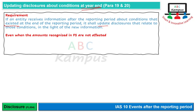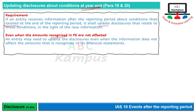Even when the amounts recognized in financial statements are not affected। बाजवकत ऐसा होता है कि ऐसी information receive होती है जो year end से relate कर रही होती है लेकिन recognized amounts effect نहیں हो رहی होتی। So an entity may need to update the disclosures even when the information does not affect the amounts it recognizes. इसकी एक example contingent liabilities होती है जिन्हें हम liability record نہیں کرتے بلکه صرف disclose کیا جاتا ہے کیونکه probable نہیں ہوتا کہ payment کرنی پڑے گی.